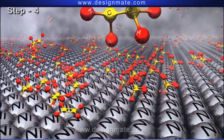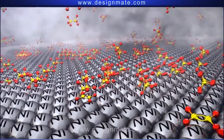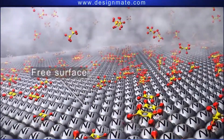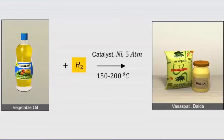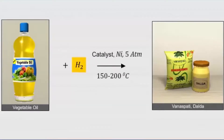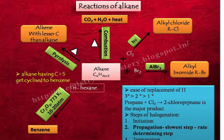In step three, another hydrogen is transferred to the intermediate, and eventually the other end also breaks free. Step four involves desorption of the product from the nickel surface, and the adsorption of more reactants continues in the process. To sum up: addition reactions are always associated with unsaturated systems; there is no removal of atoms or molecules; it is the reverse of elimination; it proceeds through an exothermic pathway; and the chief application of hydrogenation in the food industry is margarine formation from vegetable oil.